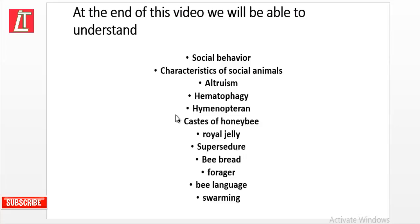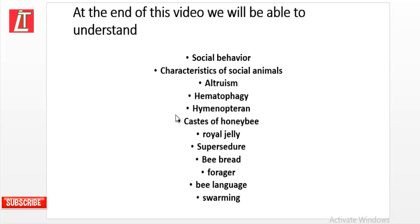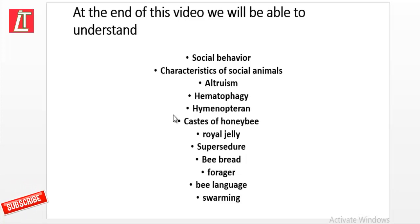At the end of this video we will be able to understand social behavior: characteristics of social animals, altruism, hematophagy, hymenopteran castes of honeybee, royal jelly, supersedure, bee bread, forager bee language, and swarming.